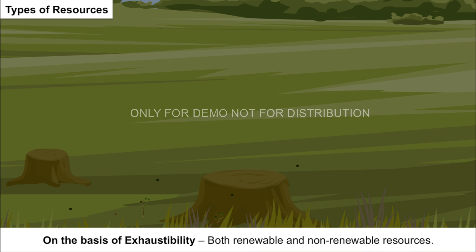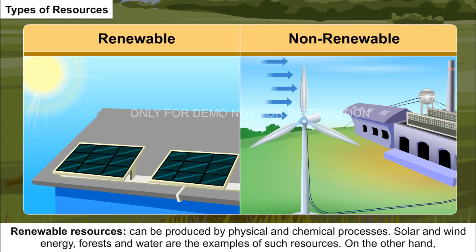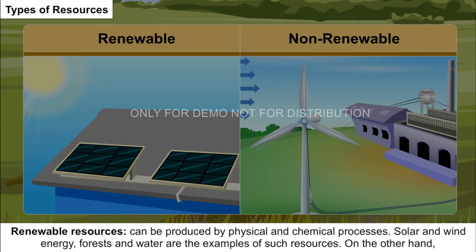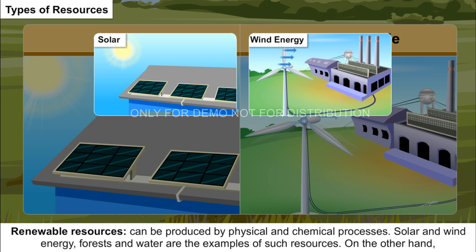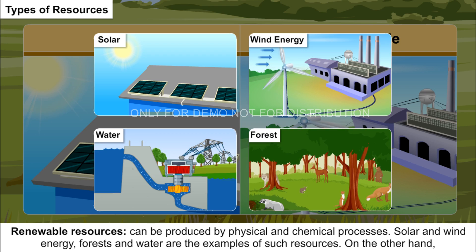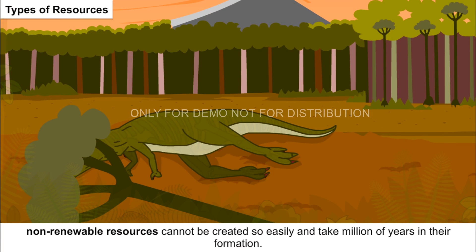On the basis of exhaustibility, both renewable and non-renewable resources come under this category. Renewable resources can be produced by physical and chemical processes — solar and wind energy, forests, and water are examples. Non-renewable resources cannot be created so easily and take millions of years in their formation; metals and fossil fuels are examples of such resources.